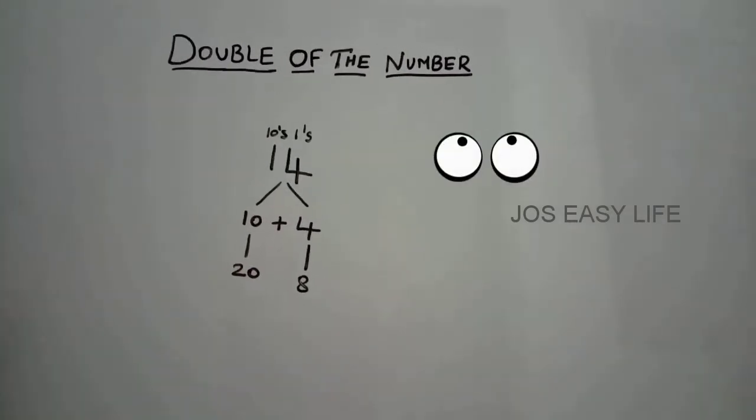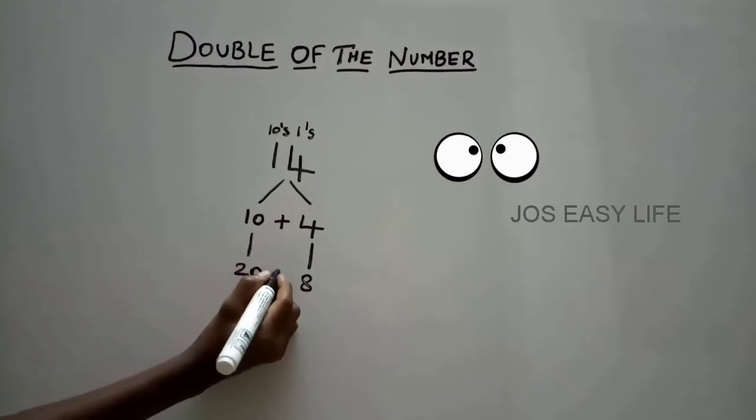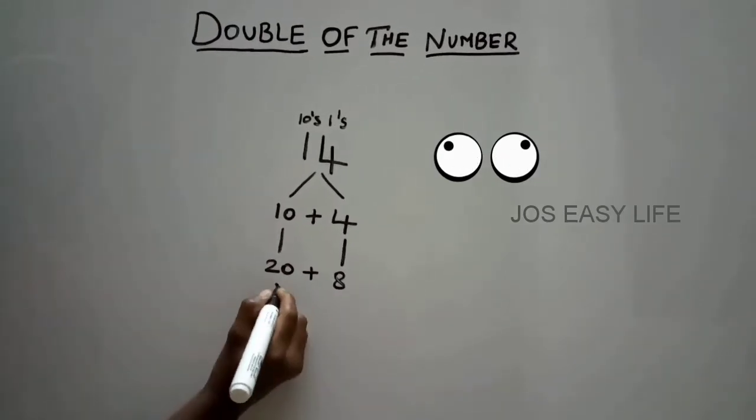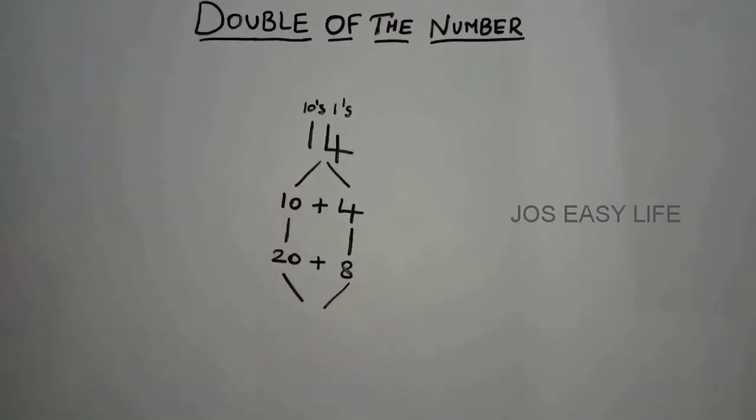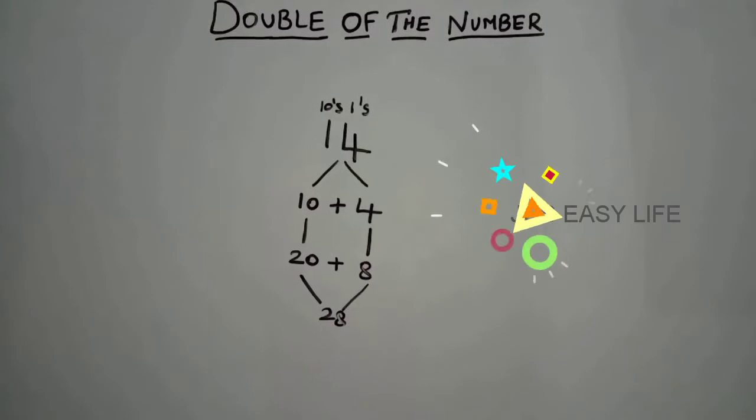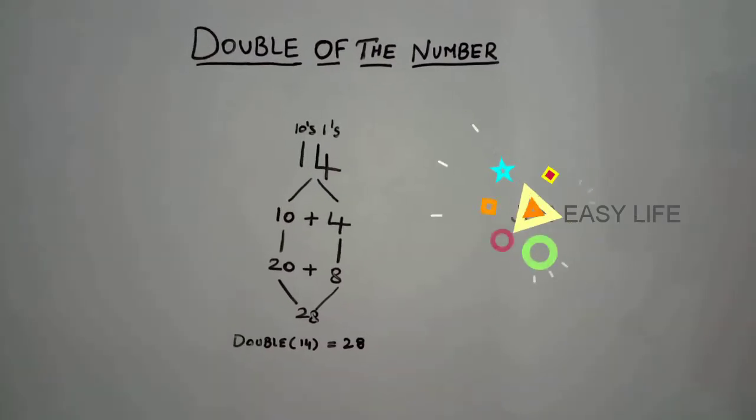Put an addition symbol over here. Now, we have to add these numbers. 20 plus 8 is 28. Double of 14 is equal to 28.